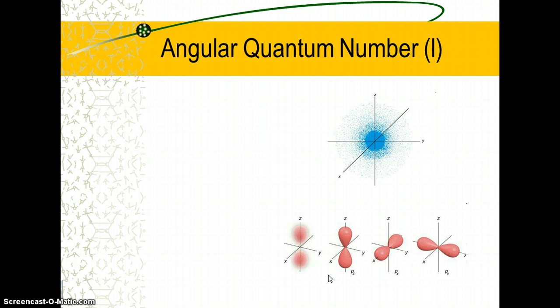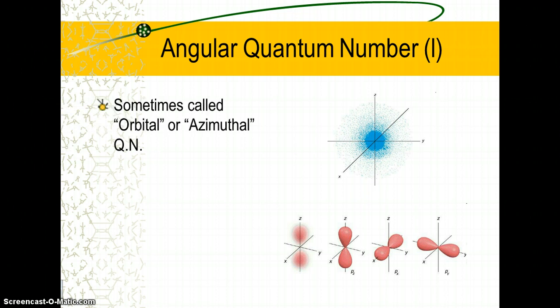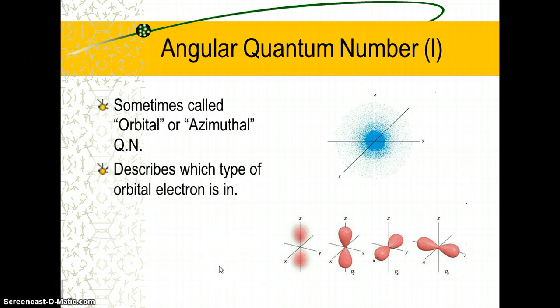The next quantum number is called the angular quantum number, or sometimes the orbital quantum number. It tells me what type of orbital my electron is likely to be in. When we draw the boundary — where the electron is 90% of the time — we get various different shapes. This angular quantum number, also called the azimuthal quantum number, tells me what type of orbital the electron is in. Orbitals are defined by their shapes.